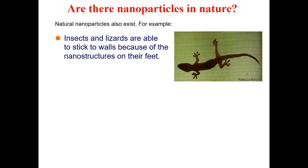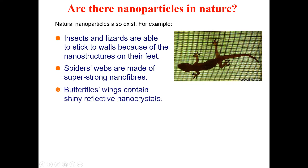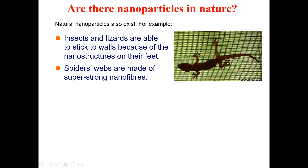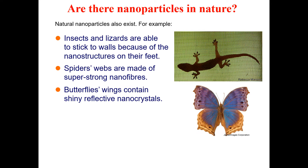Another example is the spider web. Spider webs are made from super-strong nano fibers, and spiders utilize these nano fibers to build their webs. This is also evidence of nanotechnology existing in nature.